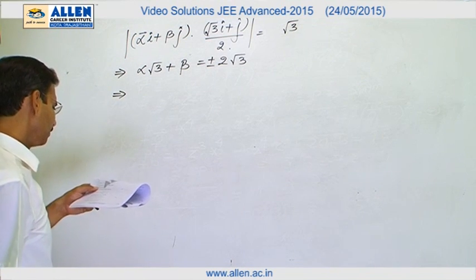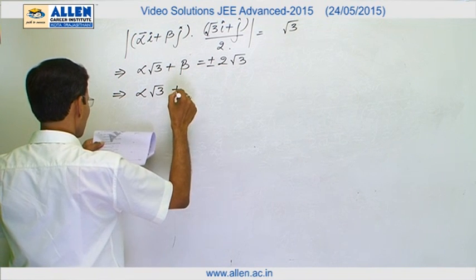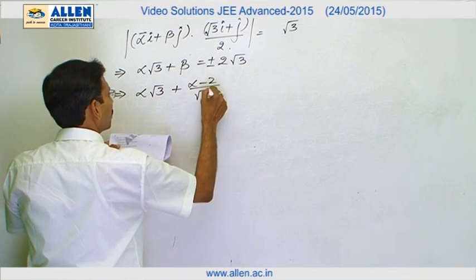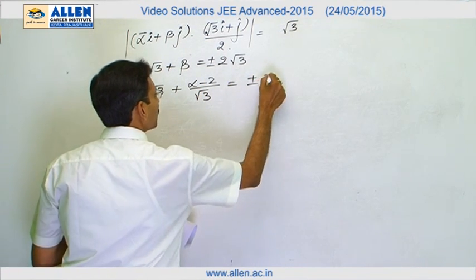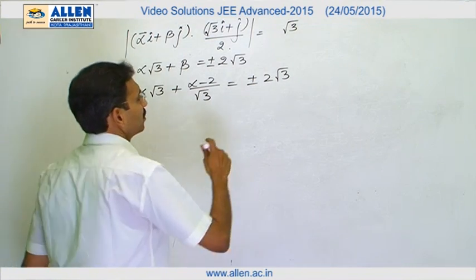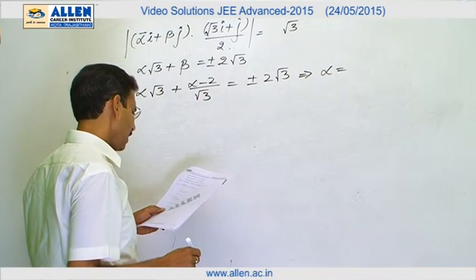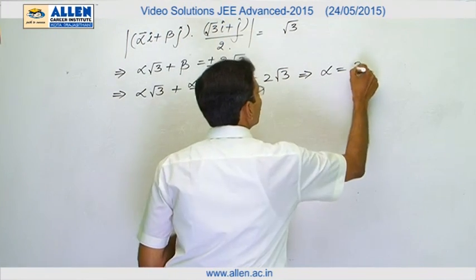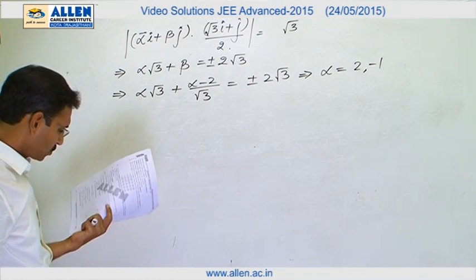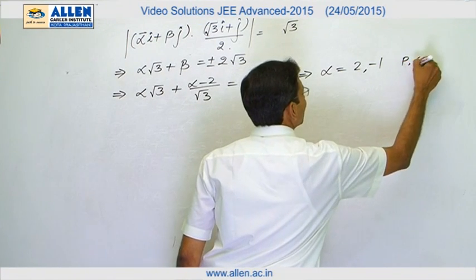And more relation is given. We will use it: alpha root 3 plus beta, and beta is alpha minus 2 upon root 3. We will solve both the signs positive and negative and we will get the possible values of alpha. The values of alpha come to be 2 and minus 1. So the modulus will be 1 or 2 and there are 2 choices P and Q. So for A part the correct matches are P and Q.